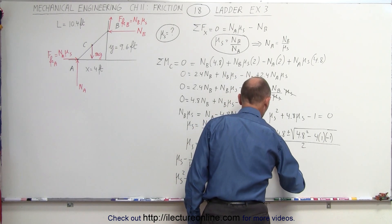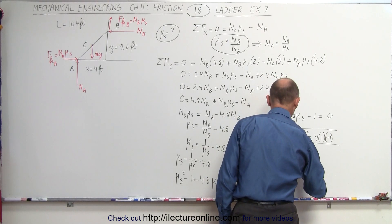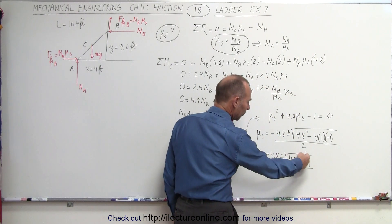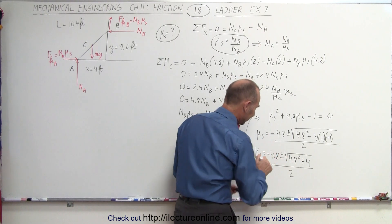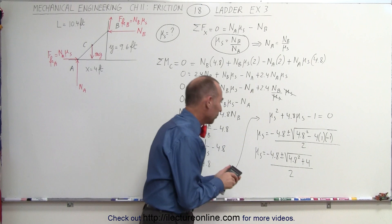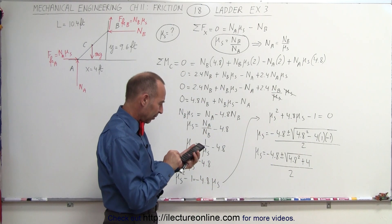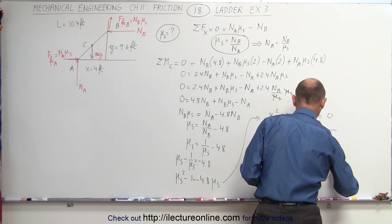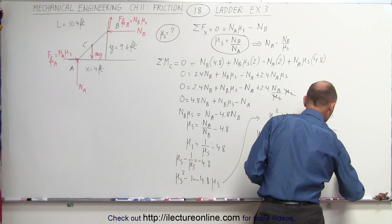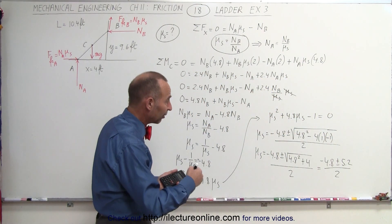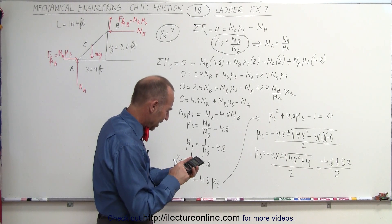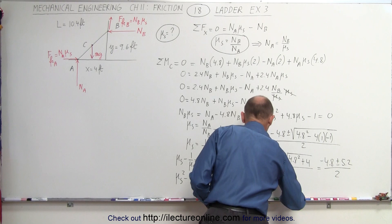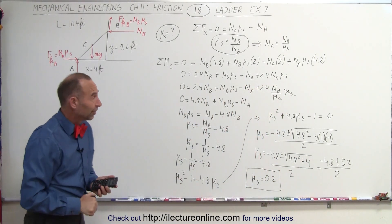Simplifying: μs = (−4.8 ± √(4.8² + 4)) / 2 = (−4.8 ± √(23.04 + 4)) / 2 = (−4.8 ± 5.2) / 2. The only physically plausible (positive) solution is taking the plus sign: (−4.8 + 5.2) / 2 = 0.4 / 2 = 0.2. So μs must be at least 0.2 to keep the ladder from sliding.